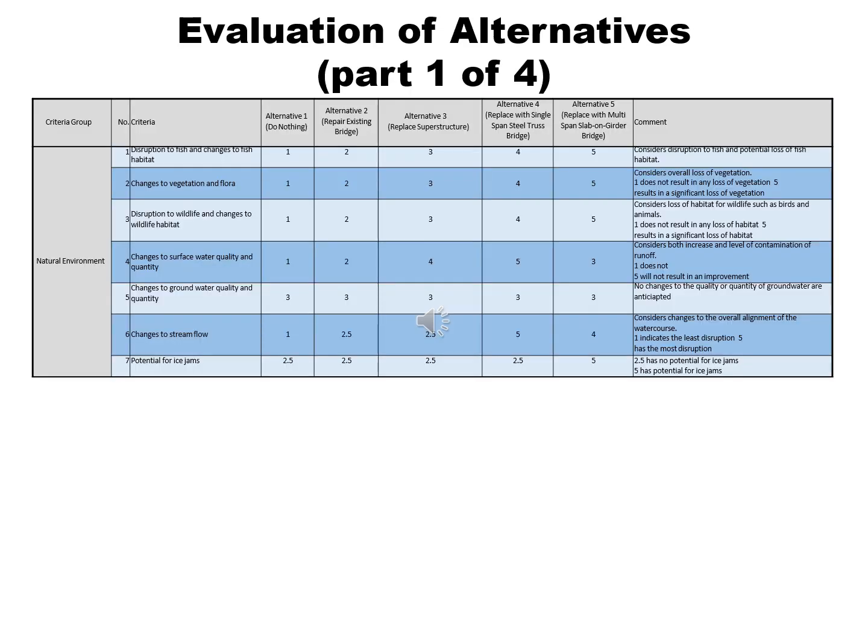The evaluation of alternatives, part 1 of 4. This slide and the 3 slides that follow evaluate 5 separate alternatives on a total of 40 separate criteria. For each criteria, the alternatives are ranked from 1 to 5, with a ranking of 1 having the least disturbance and a ranking of 5 having the most disturbance, except where noted. Each row totals 15 points to ensure each criteria is weighted the same. The five alternatives are: Alternative 1, do nothing; Alternative 2, repair the existing bridge; Alternative 3, replace the superstructure; Alternative 4, replace with a single-span steel truss bridge; and Alternative 5, replace with a multi-span slab on girder bridge.